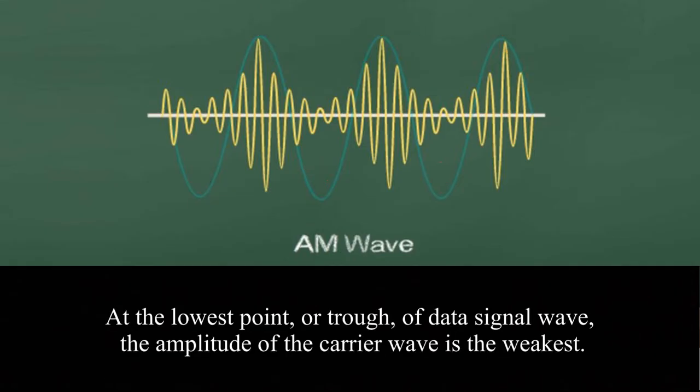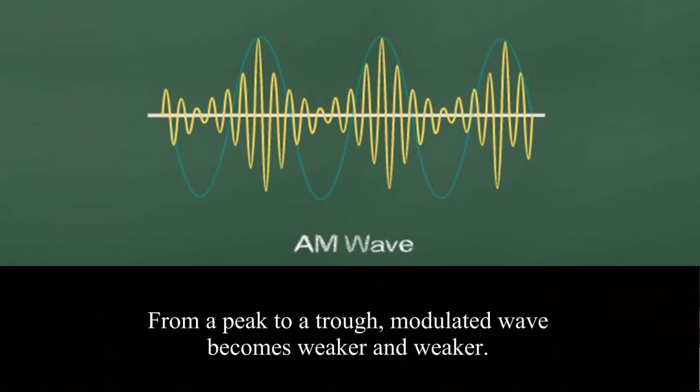At the lowest point or trough of a data signal wave, the amplitude of a carrier wave is the weakest. From the peak to trough, the modulated wave becomes weaker and weaker.